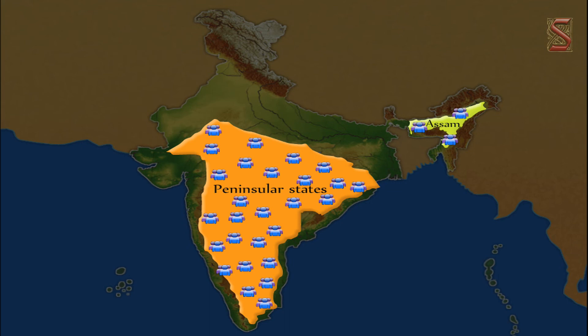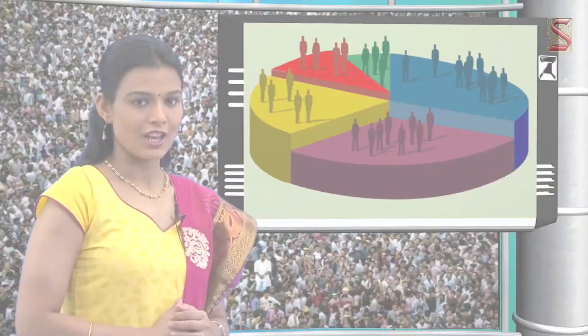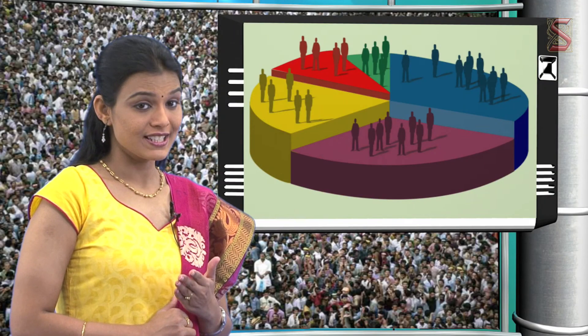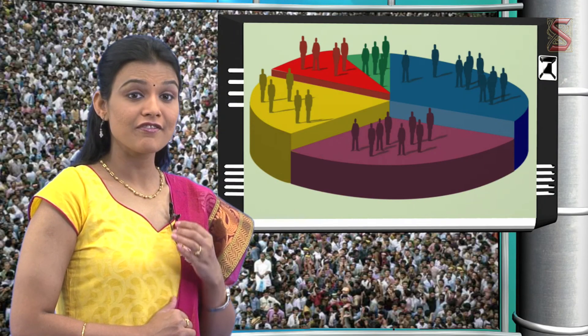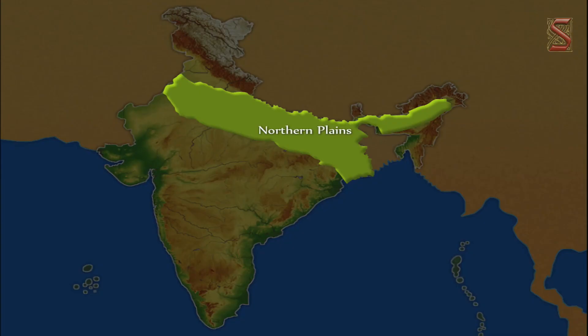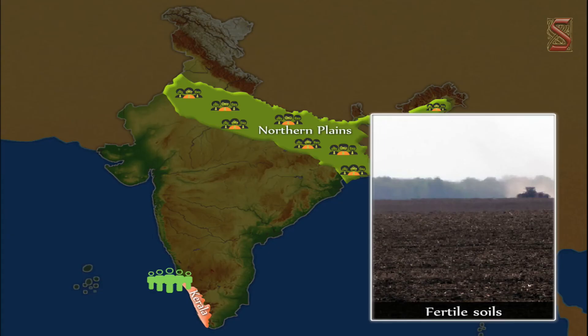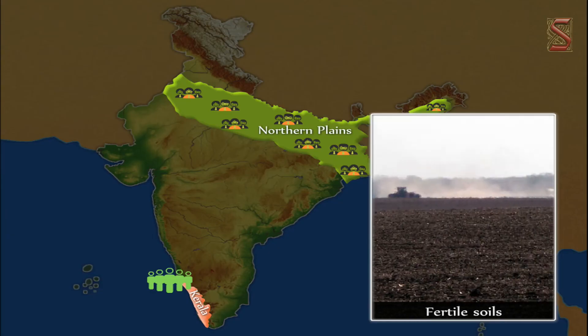The states of Assam and other peninsular states have moderate population density due to hilly terrain, moderate to low rainfall, and shallow or less fertile soils. Plains facilitate high density of population. The northern plains and Kerala have high to very high density because of flat terrain and fertile soils. Students are asked to find out the states in the northern plains with high population densities.